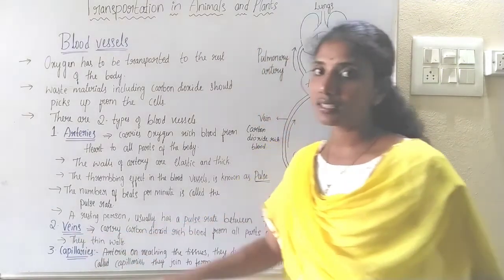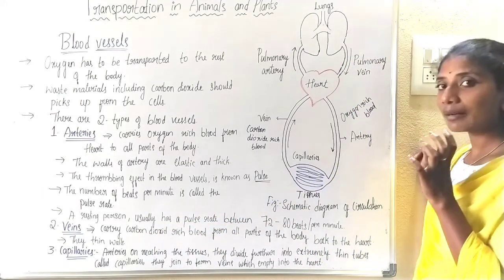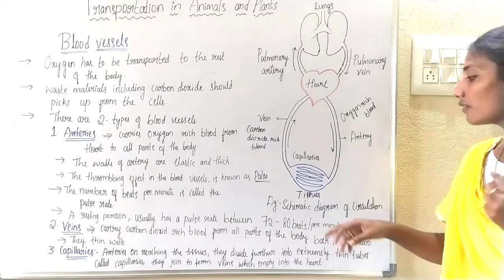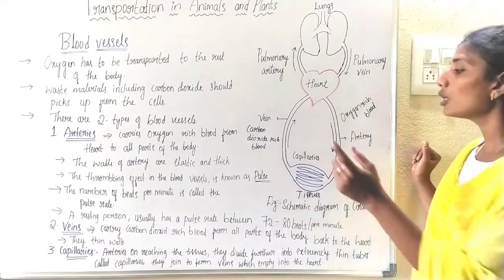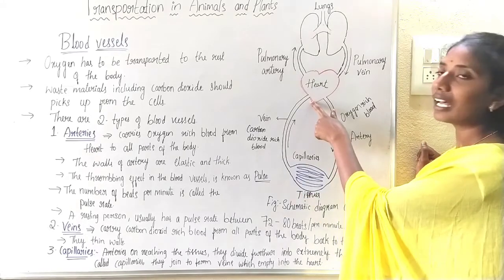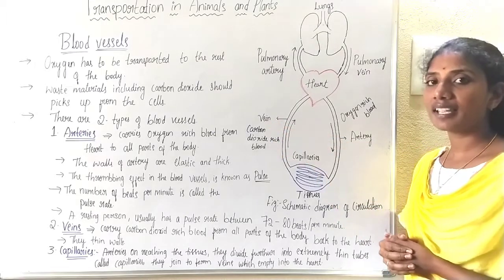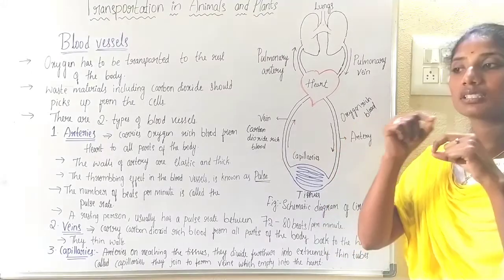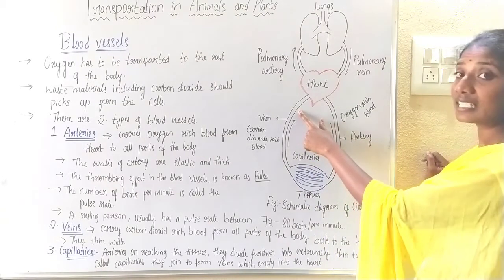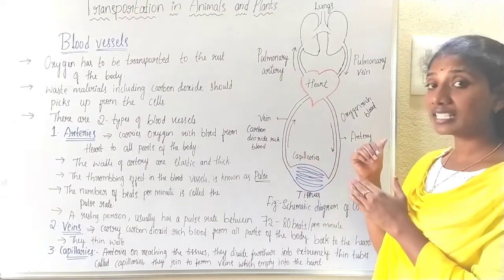The next type of blood vessel is veins. Veins are a type of blood vessel which carry carbon dioxide-rich blood from the tissues to the heart. As a result of respiration, carbon dioxide is produced in the tissues and cells, and it moves from cells to the heart via veins. The wall of a vein is thin compared to the artery, so we cannot find the same amount of pressure as in the arteries.